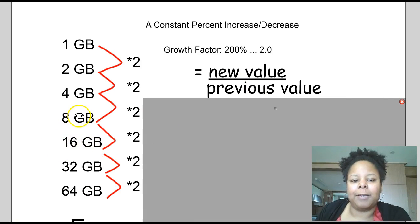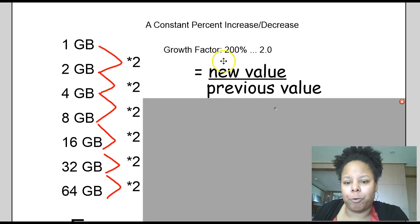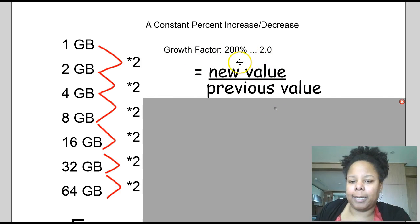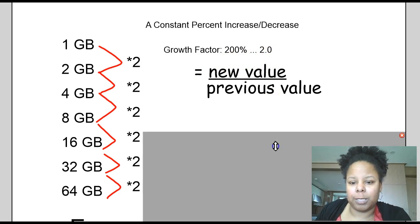Instead of looking at how each number is increasing by adding or subtracting, we're looking at what number are we multiplying the previous amount by to get the new amount. And it seems like the number that we're multiplying the previous amount by to get the new number is two. So what's a little bit different is instead of increasing by two, we are actually increasing it by a multiple of two or factoring the two or multiplying two. So the growth rate is actually going to be a growth factor of 200 percent or 2.0.